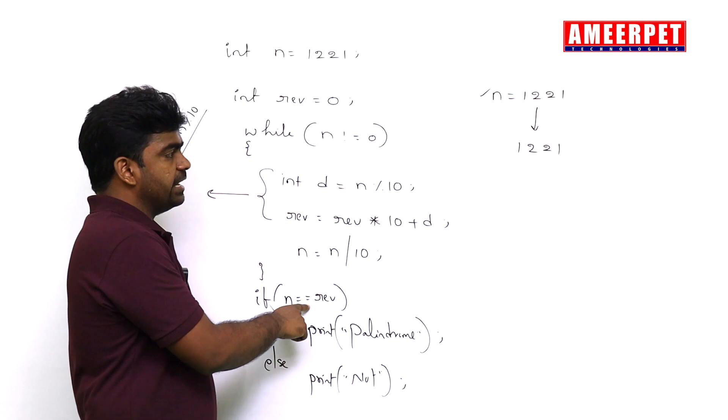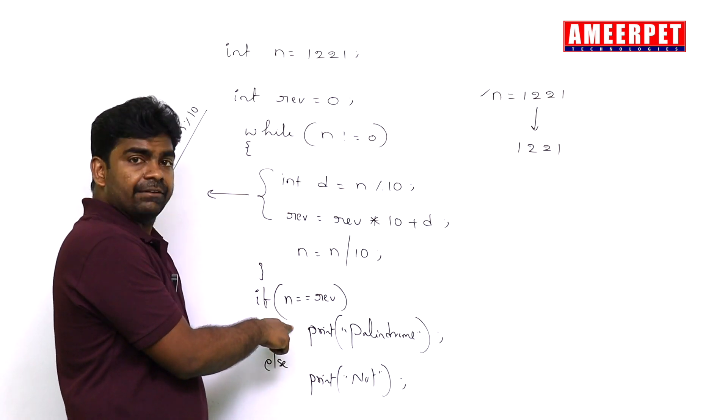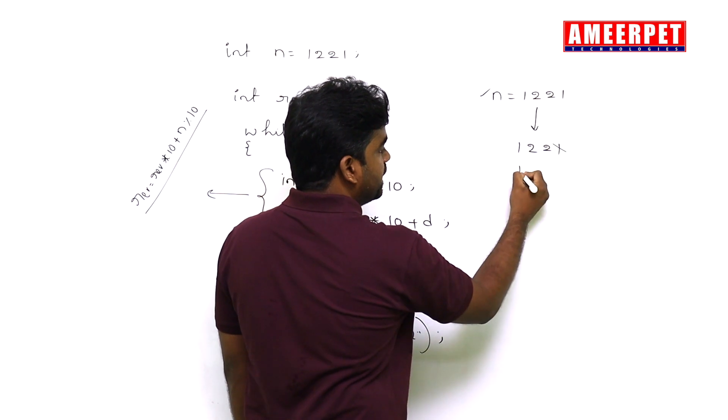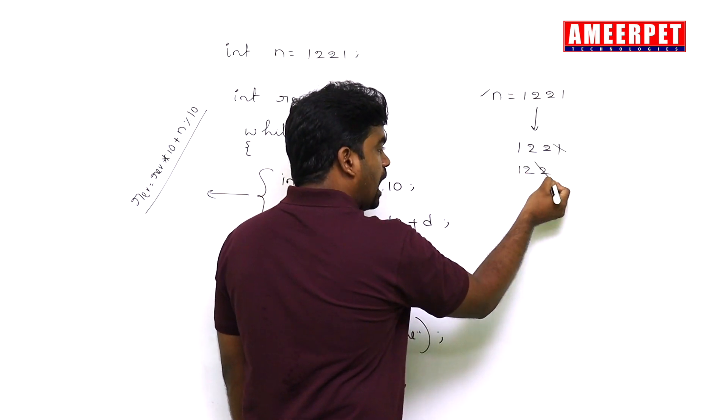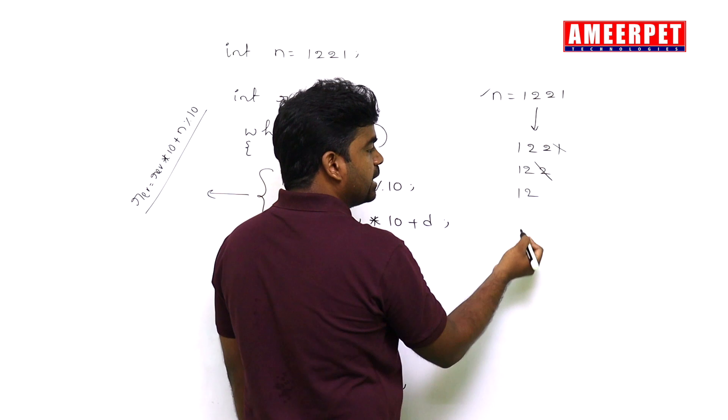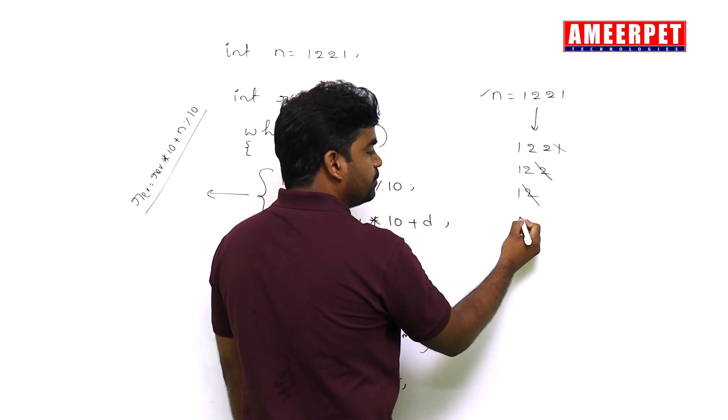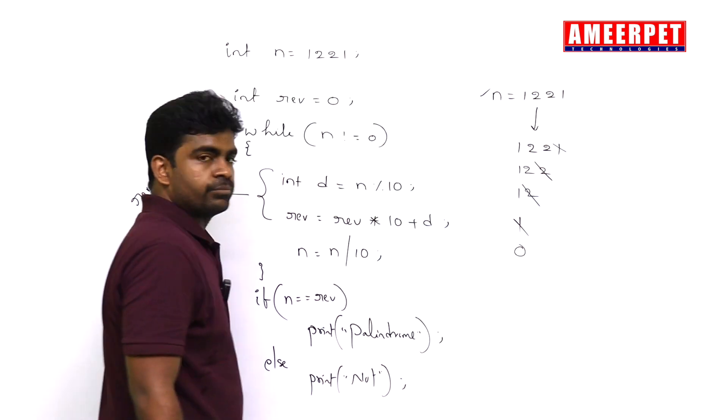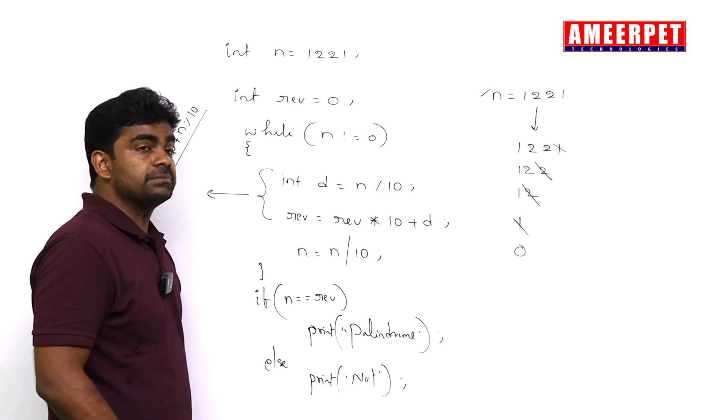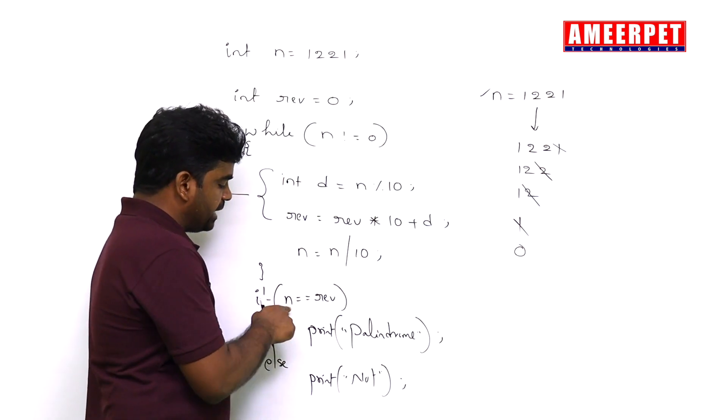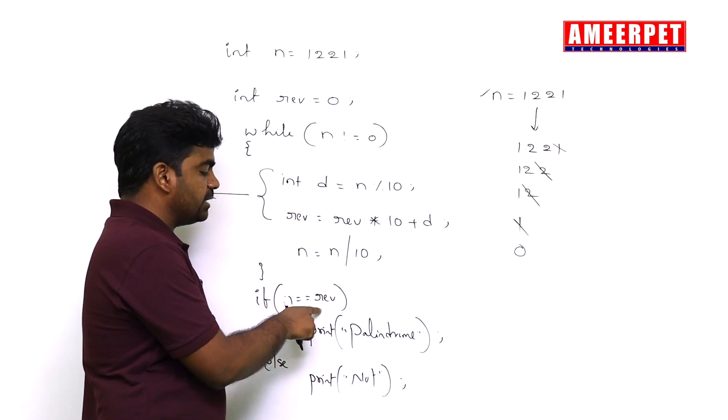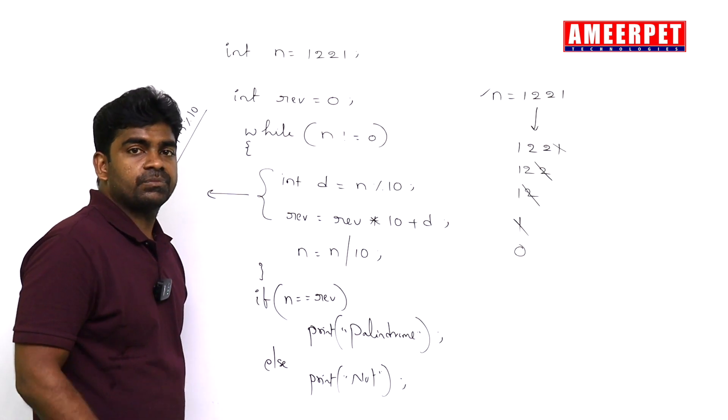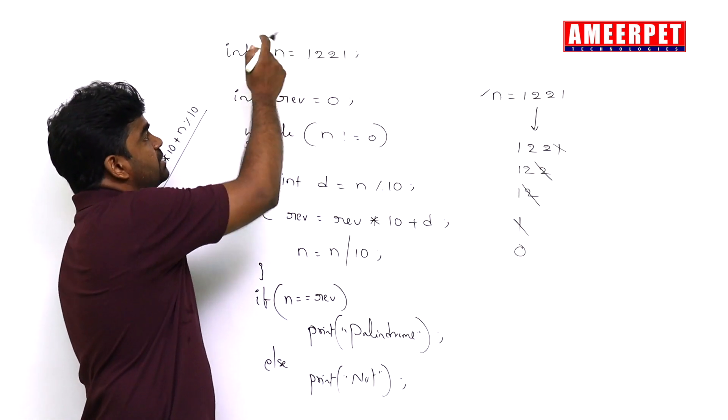But one problem you will get - what is the problem? See, whenever you keep on making it reverse, the n value changes. First after working with the digit, n value becomes 122, after working with 2, n value becomes 12, after working with 1, n value becomes 1, after working with 1, n value becomes zero. Finally n value becomes zero. So every time whenever you are comparing n with reverse, you compare zero with the reverse, so you will never get the answer.